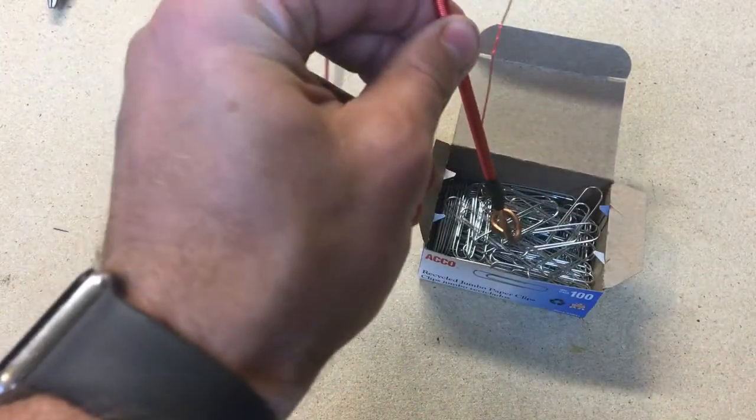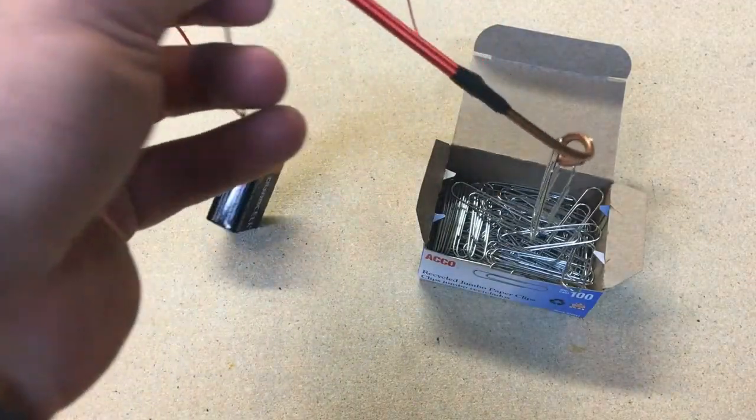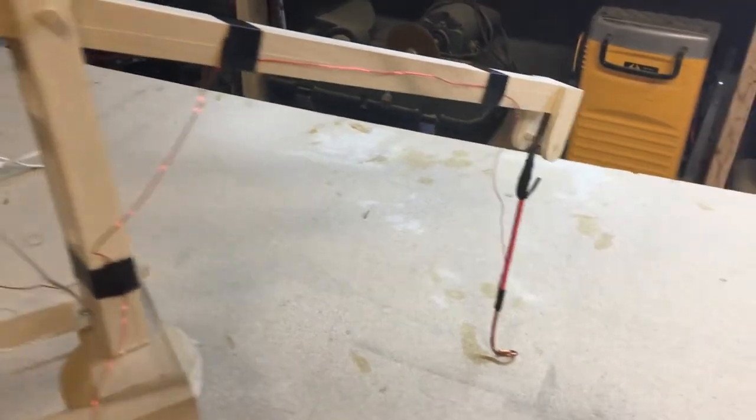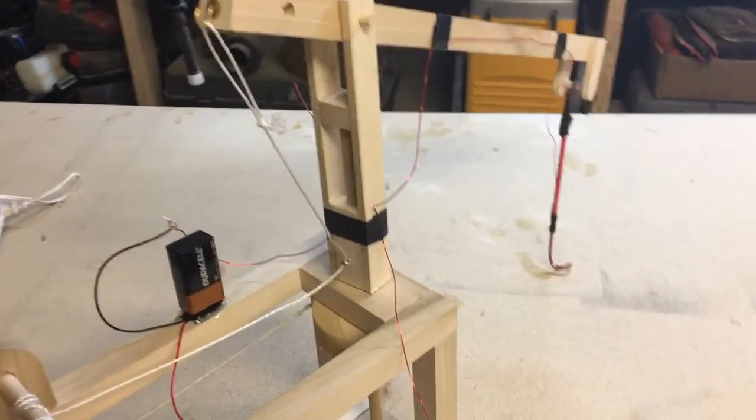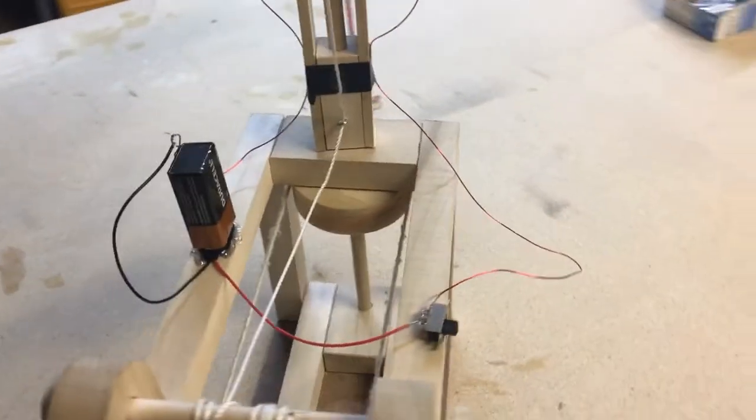Test out your circuit to see if it can lift some paper clips. If it works, replace the hook on your crane with the electromagnet, and position your battery and switch in convenient places that will not restrict the crane's movement.